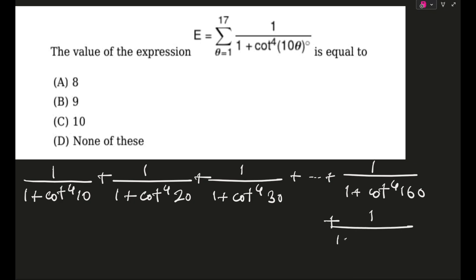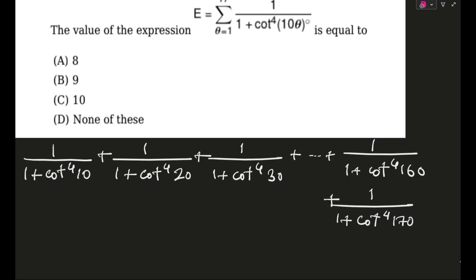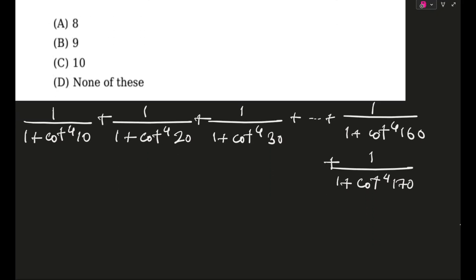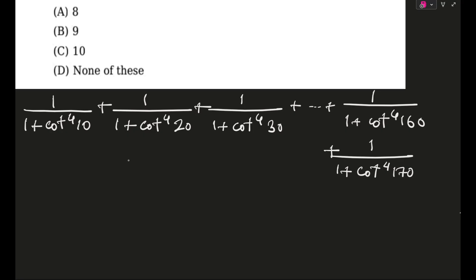I hope you can see one very interesting thing — terms are repeating in the denominators because cot⁴170° would actually become cot⁴10°. My motive of saying this is that if you use the angles property, this will come out to be two times of 1/(1 + cot⁴10°) and so on.